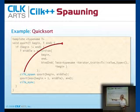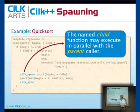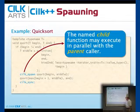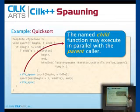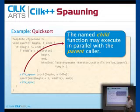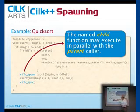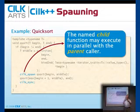What we've done is indicate with the SILKspawn keyword that this child — namely the recursive Qsort — can execute in parallel with the parent caller. The parent then goes on to start quicksorting the second part of the array, so basically the two parts of the array are now being sorted in parallel.